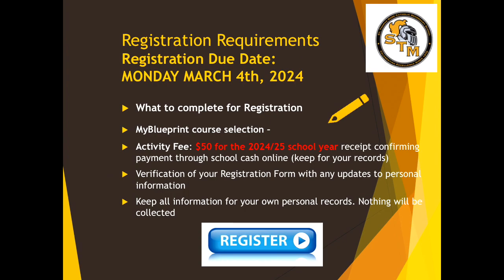Your registration is due Monday, March 4th. There are 3 things that must be completed: you need to complete your My Blueprint course selection, you need to pay the activity fee of $50 for the 2024-25 school year through School Cash Online, and you need to verify the information on your registration form. Once you have completed these 3 tasks, keep the information for your own personal record — nothing will be collected. Monday, March 4th is the deadline. Please reference the option advice package when you pick your courses, and if you have any questions, don't hesitate to book an appointment with me in guidance. Thanks, grade 10s.